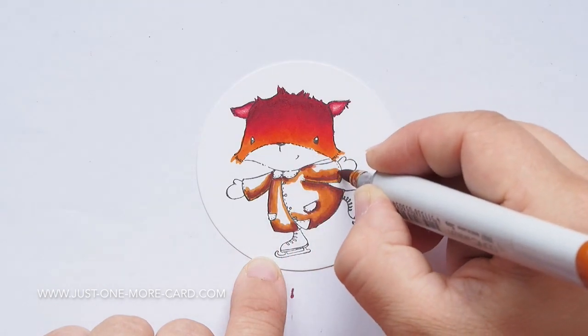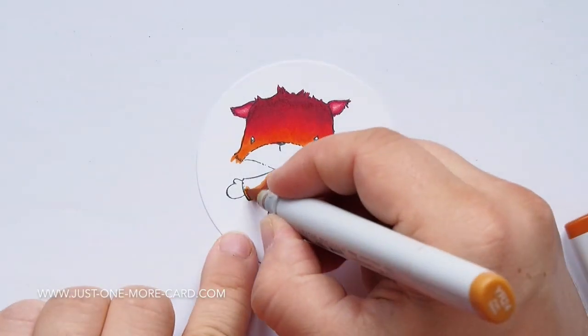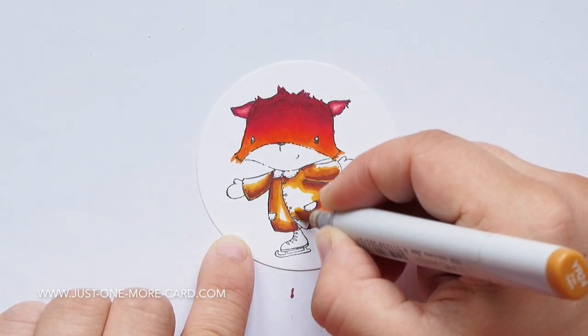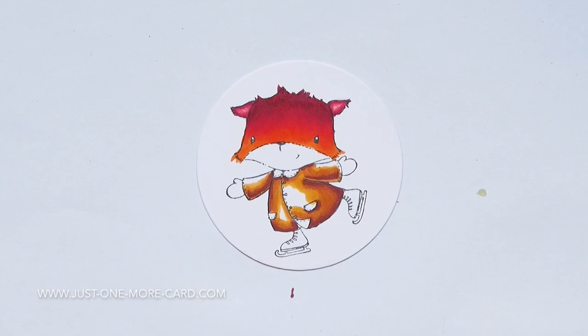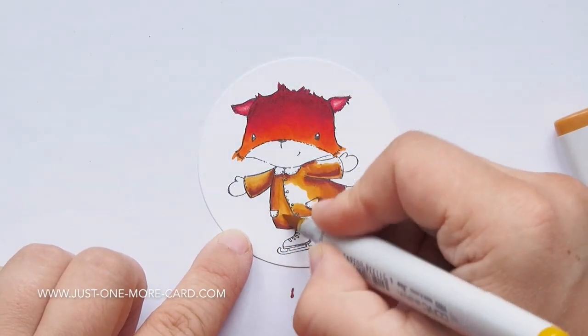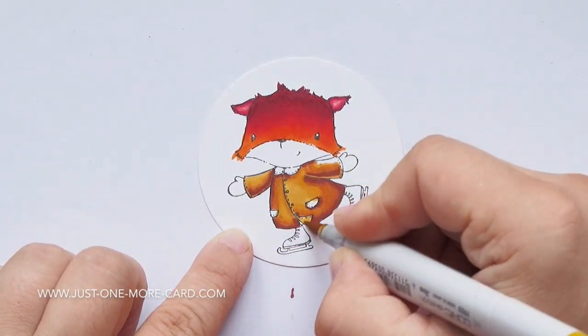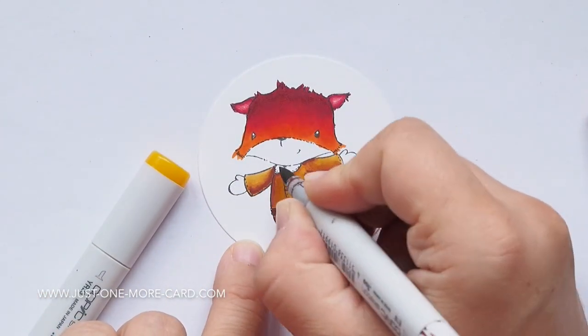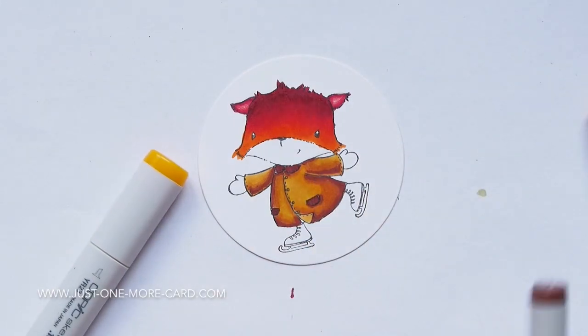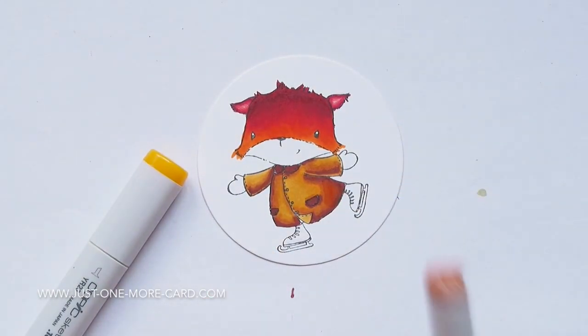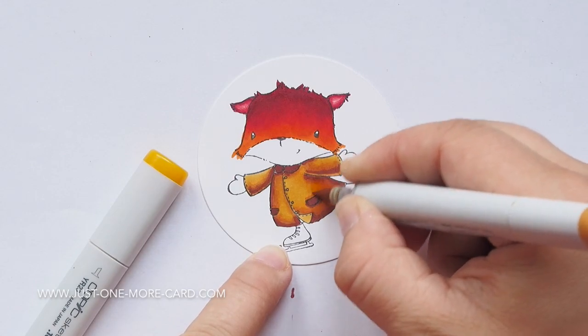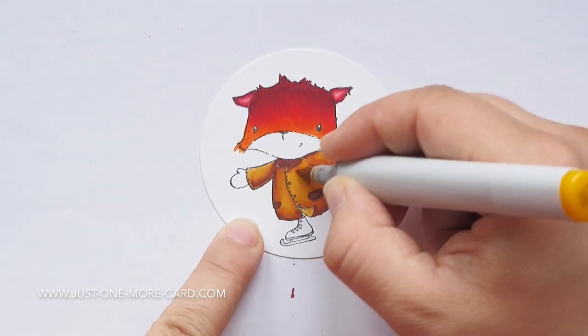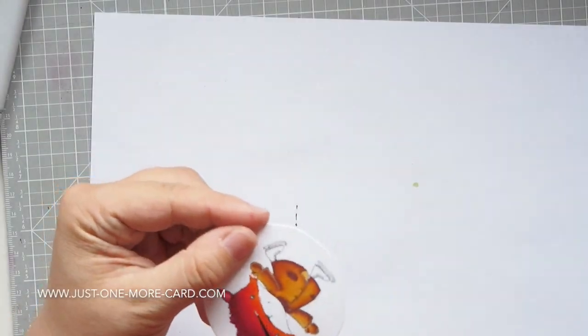Again, I'm blending from dark to light, laying down the darkest color in the shadow areas and then simply blending towards the lightest color. I like to mix brown colors with orange colors. Some of the YR20s are like an ochre color and I felt it was really nice for this card. I tried to keep the colors not super bright and intense, not spring colors but more muted colors.